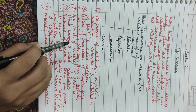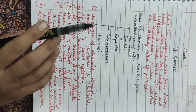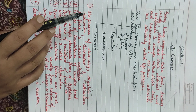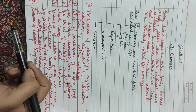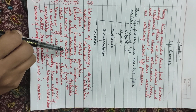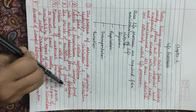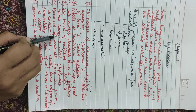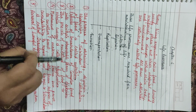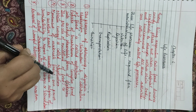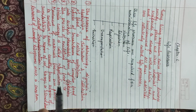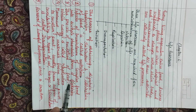Now this digested food has reached every cell, but each cell can only obtain energy from it when it has oxygen, which comes through breathing. So when digested food combines with oxygen — that is oxidation of food — when oxidation of food occurs and energy is released, that process is called respiration. Respiration means the process of oxidation of food to obtain energy.